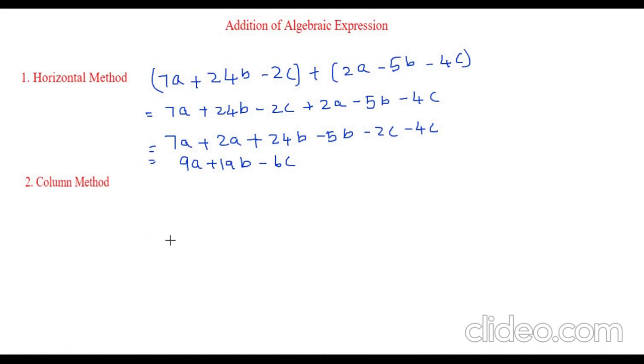Now let's see the same example for the column method. For column method first we will write the first equation in the first row and then the next row. Let's write the first equation which is 7a plus 24b minus 2c. I am taking the same example so that it will be easy for you to understand. Next expression is 2a minus 5b minus 4c.